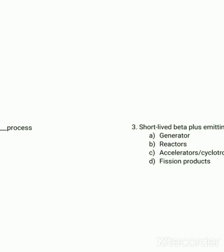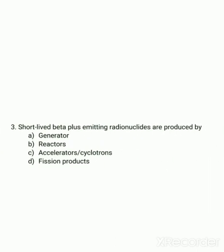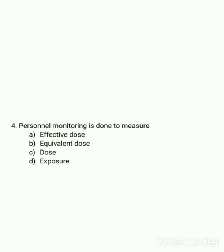The third question: short-lived beta-plus emitting radionuclides are produced by generators, reactors, accelerators, or cyclotrons? In PET we use F-18, which is the main short-lived beta-plus emitting radionuclide. F-18 is produced in the cyclotron. All short-lived beta-plus emitting radionuclides like O-15, N-13, and C-11 are produced by cyclotrons. So the exact answer is C — accelerators or cyclotrons.